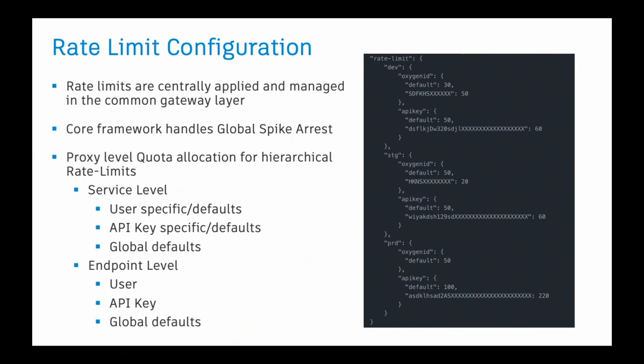This is a level of hierarchy — mostly the common configuration that gets applied to every proxy we deploy on Apigee. But there are custom rules based on every system's need. This is a rough example of sample configuration that we use internally. It's optional that you define a user-based or API key-based configuration. If you don't define anything, there's a core system which takes care of applying the spike arrest and global rate limits.